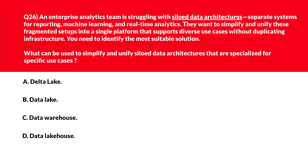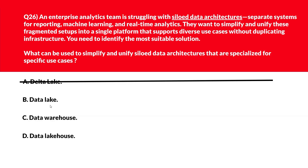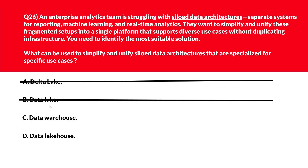All righty, now let's look at this question — this is all about siloed data structures. By looking at the keyword you might already be guessing the correct answer, and another keyword is 'simplify.' Option A is Delta Lake. Delta Lake adds reliability to lakes but doesn't unify multiple architecture types — incorrect. Option B is data lake. Data lake handles raw data but lacks structured query and governance features — wrong answer. Option C says data warehouse. Data warehouse supports structured analytics but excludes unstructured and streaming workloads — therefore wrong choice.